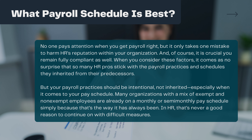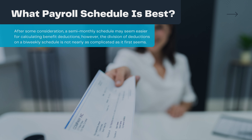Many organizations with a mix of exempt and non-exempt employees are already on a monthly or semi-monthly pay schedule simply because it's the way it has always been. In HR, that's never a good reason to continue on with difficult measures. After some consideration, a semi-monthly schedule may seem easier for calculating benefit deductions. However, the division of deductions on a bi-weekly schedule is not nearly as complicated as it first seems.